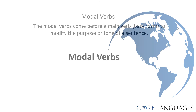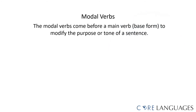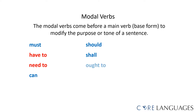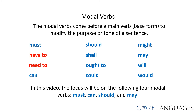Modal verbs come before a main verb, and we use them to modify the purpose or tone of a sentence. Here are examples of modal verbs in the English language: Must, Have to, Need to, Can, Should, Shall, Ought to, Could, Might, May, Will, Would. Notice that Have to and Need to are in red — they could be considered half-modal verbs. We can also use them as full verbs, and they follow slightly different conjugation patterns. In today's lesson, we will focus on four modal verbs: Must, Can, Should, and May.